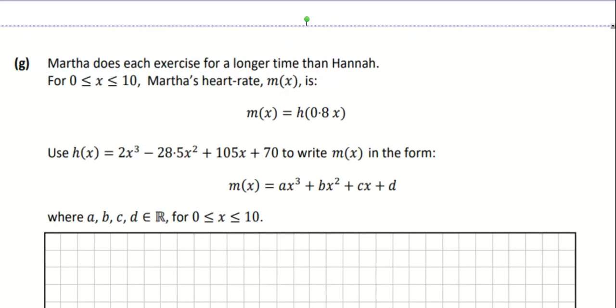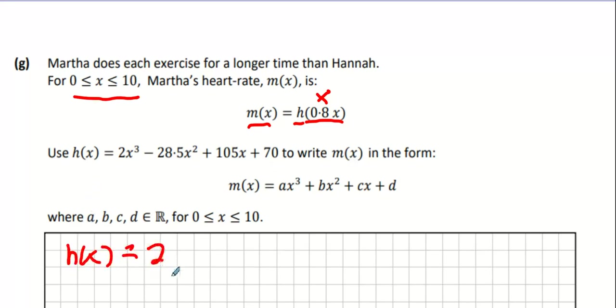And of course there's a part G because why not. Marta does exercise for a longer time than Hannah, 0 to 10 minutes. And Marta's heart rate M of X, see the way Marta's heart rate M of X is the same as Hannah's but instead of X it's replaced with 0.8X. So here's what we're going to do. We're going to take out H of X and what we're going to do is anywhere we see X squared or X, anywhere we see X, we're going to replace it with 0.8X.